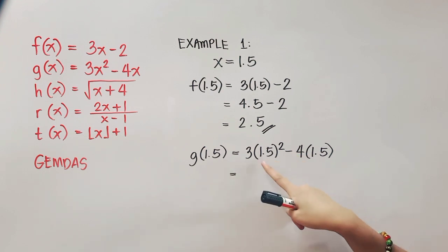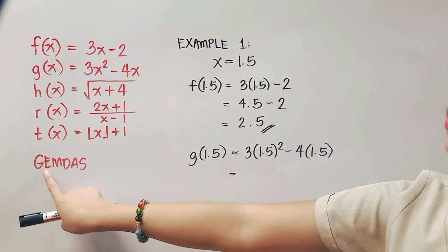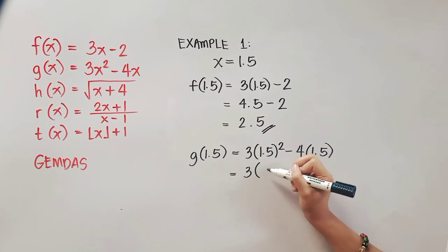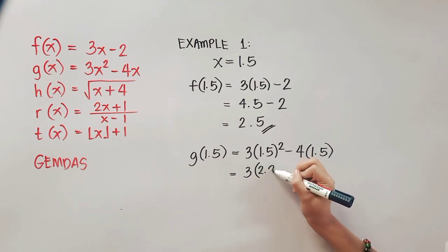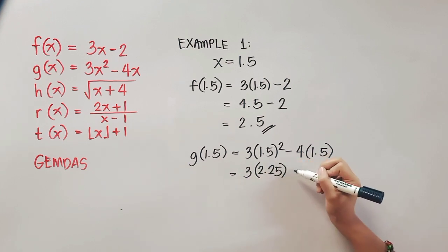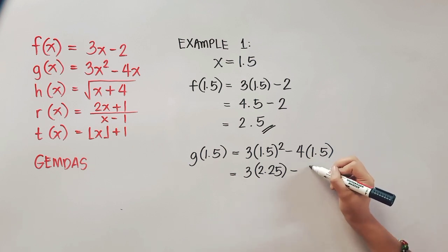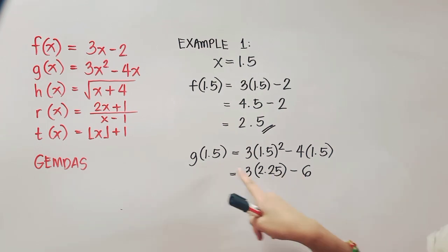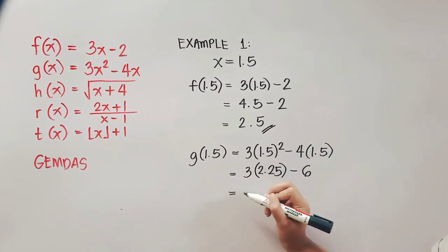After that, we'll start with the exponent before multiplication. So we have here 3, 1.5 raised to 2, that will give us 2.25. And then you multiply this portion, that will give us 6. Now again, start with multiplication before subtraction from our GEMDAS order.